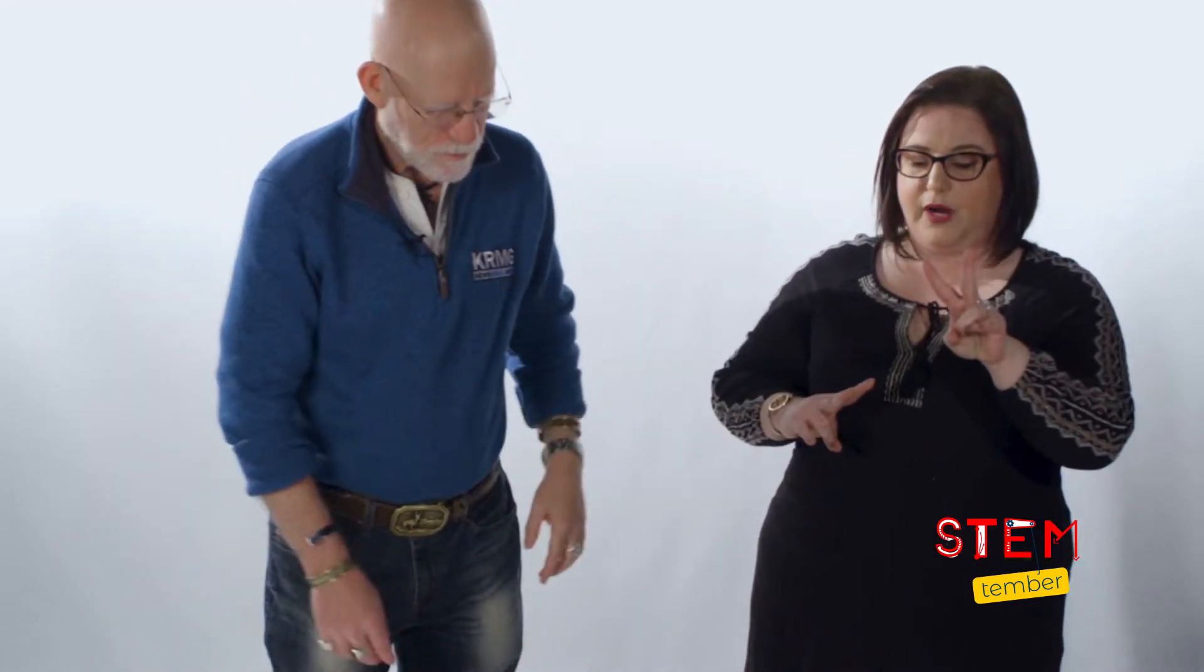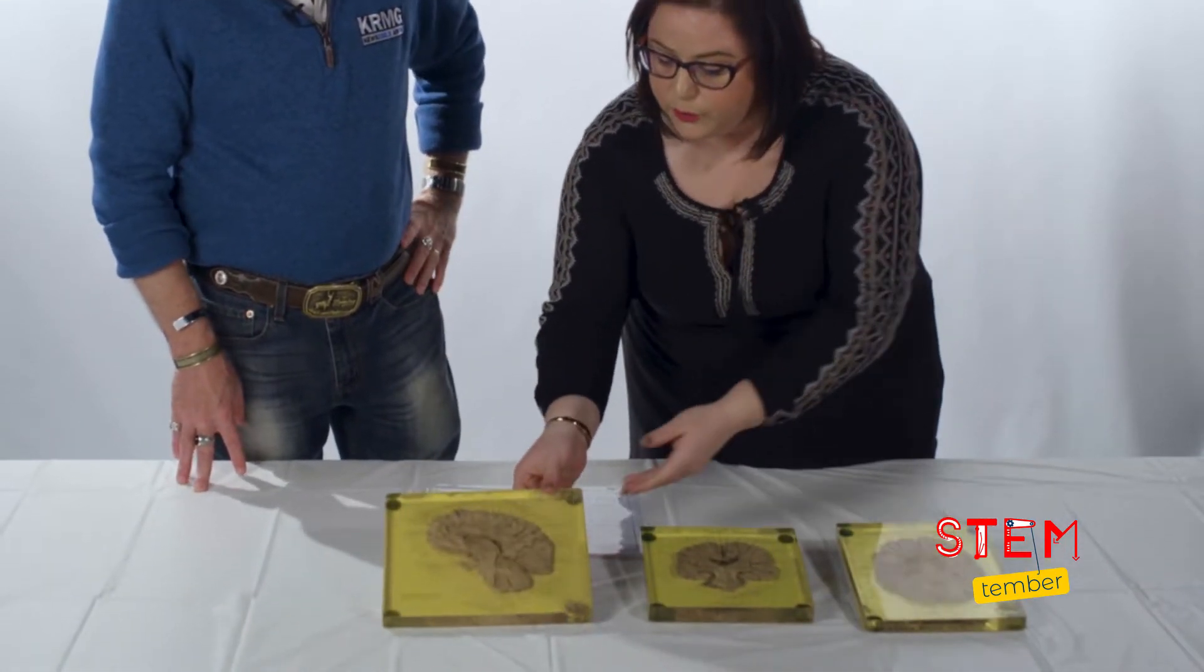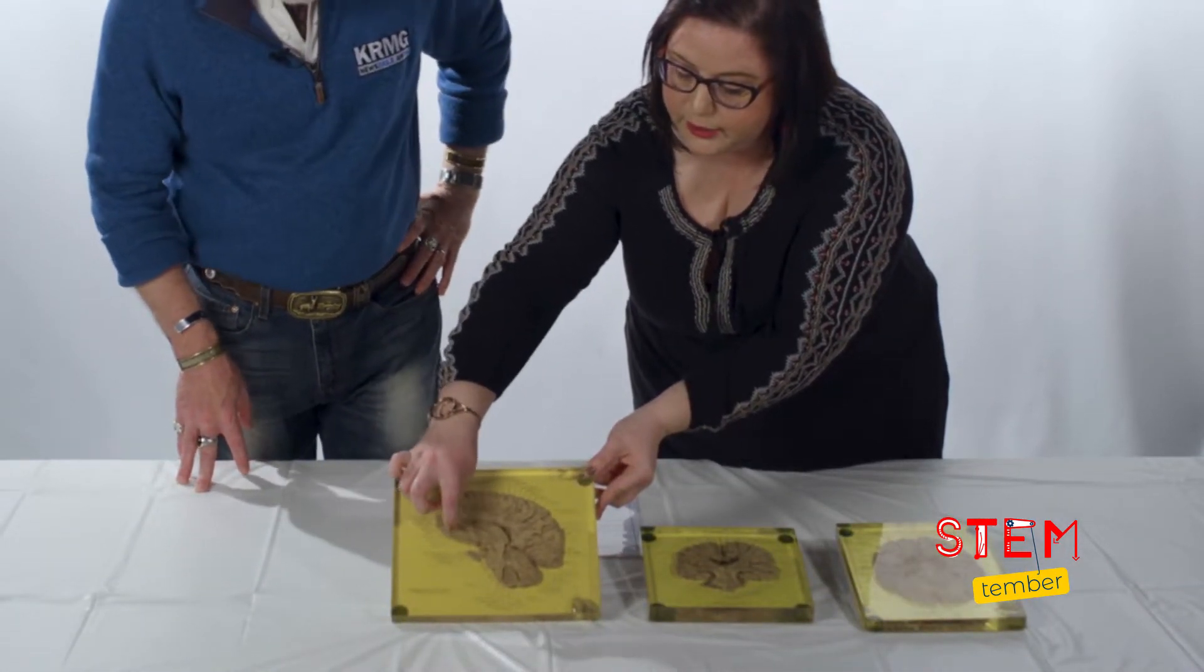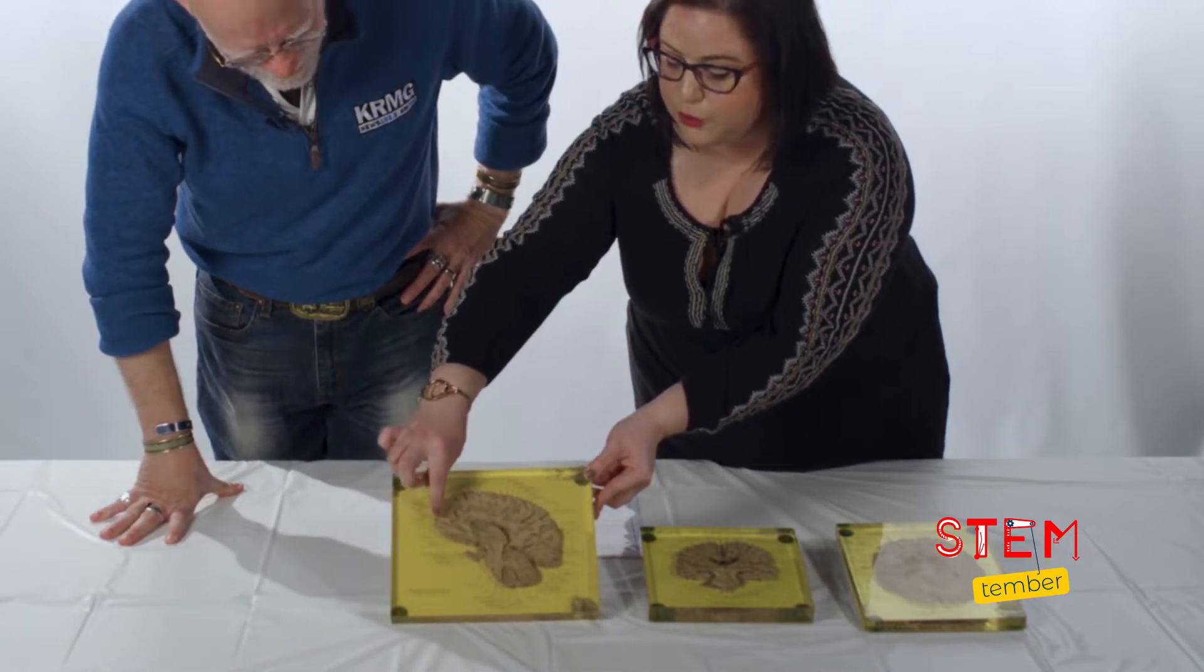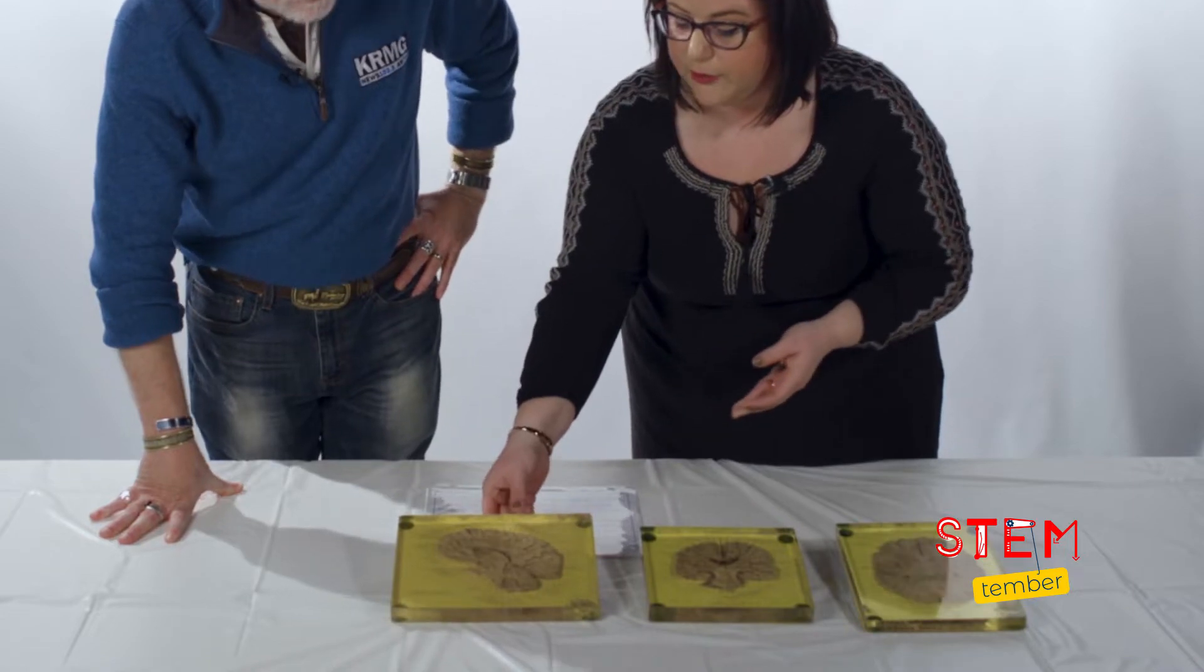So we have two main parts in the brain. So you will have your frontal lobe right here. Which is right there. Exactly. So this one is super important because the frontal lobe is the part of your brain that is going to help you to make decisions.